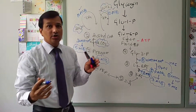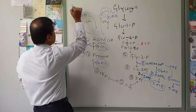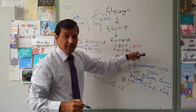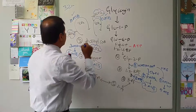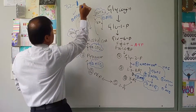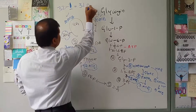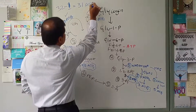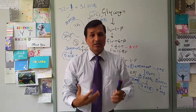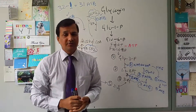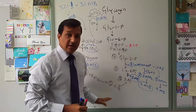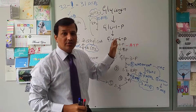Subtracting the 1 ATP consumed at the PFK1 step: 32 minus 1 equals 31 ATPs. So for every glucose-1-phosphate obtained from glycogen, skeletal muscle gets 31 ATPs when using the glycerol phosphate shuttle mechanism.